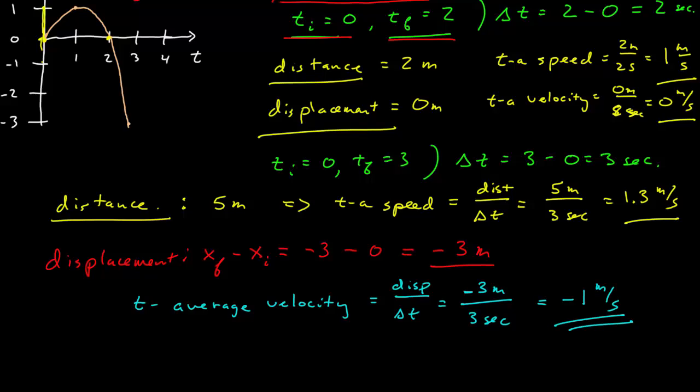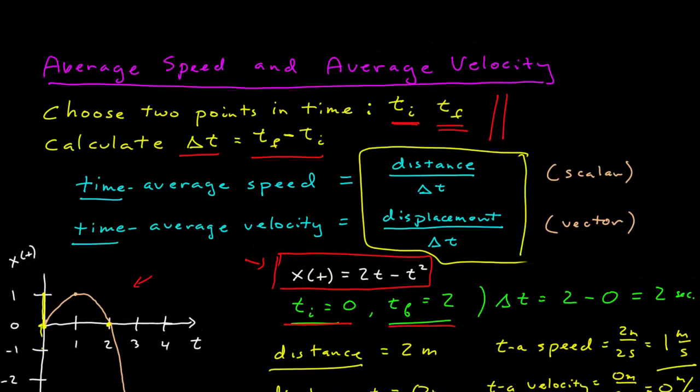Time average velocity is a vector, because displacement is a vector, so this is telling me that the time average velocity is a vector, whose magnitude is 1 meter per second, and it's pointing in the negative x direction. You'll never get one of these wrong again.